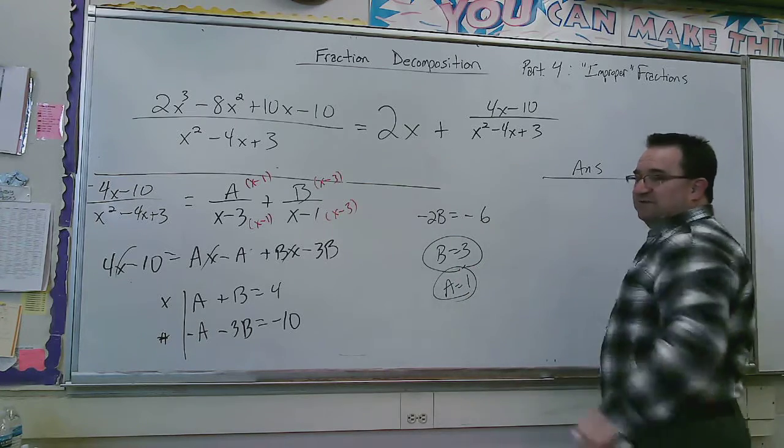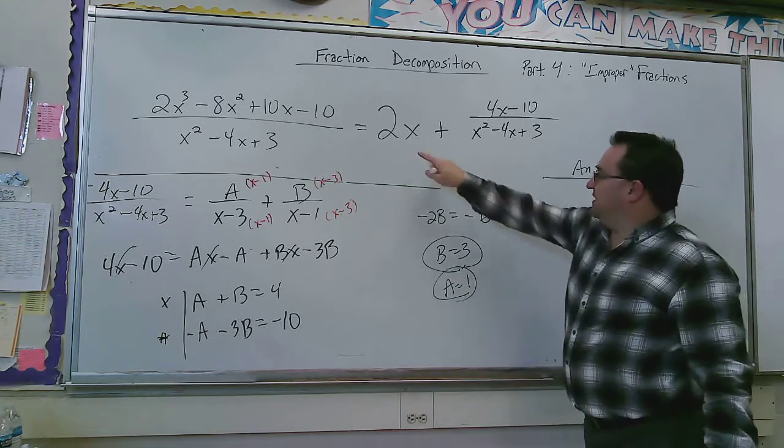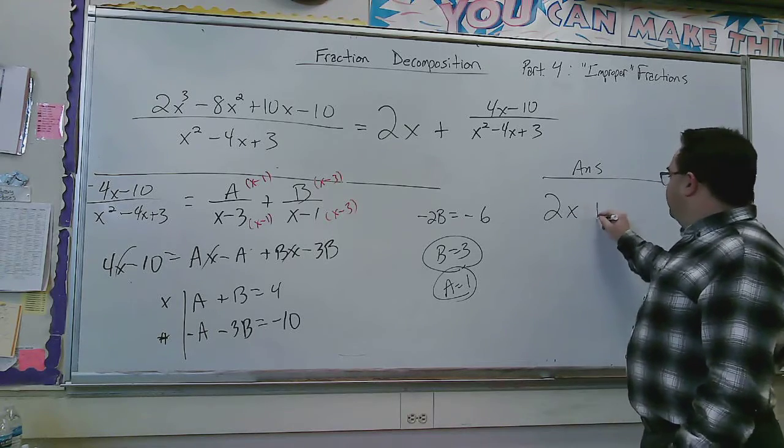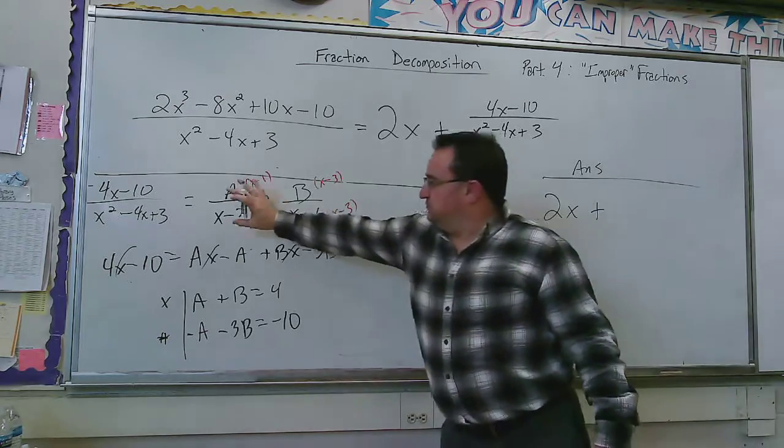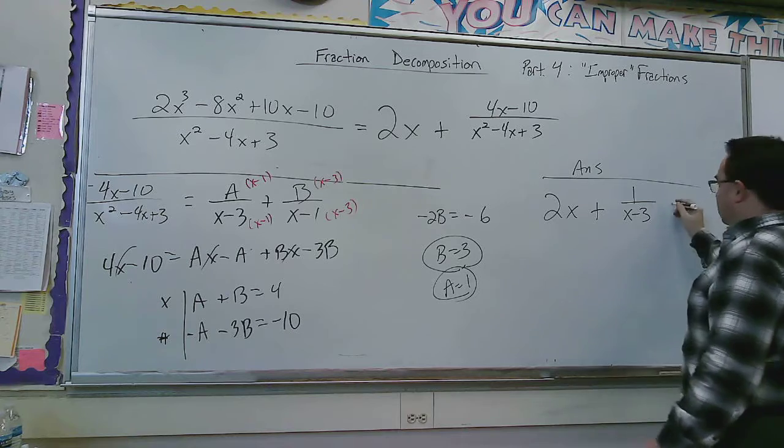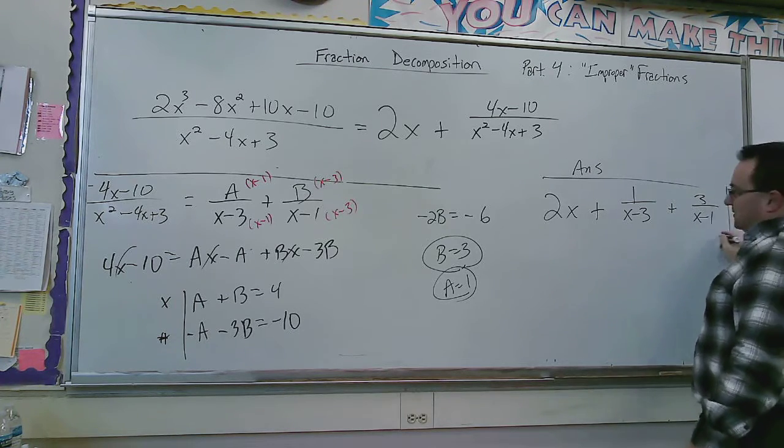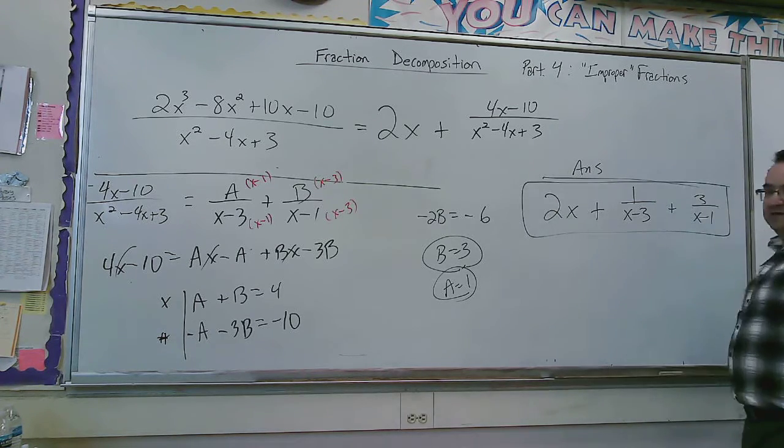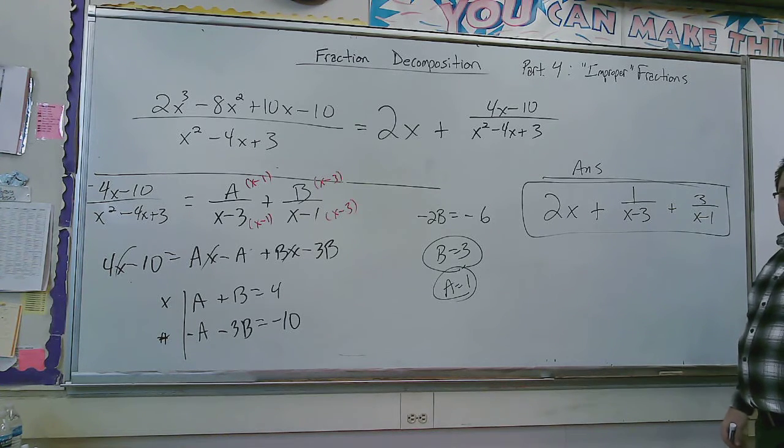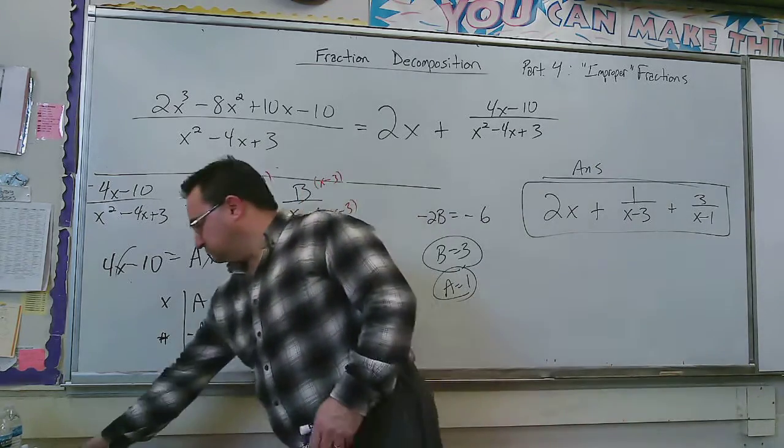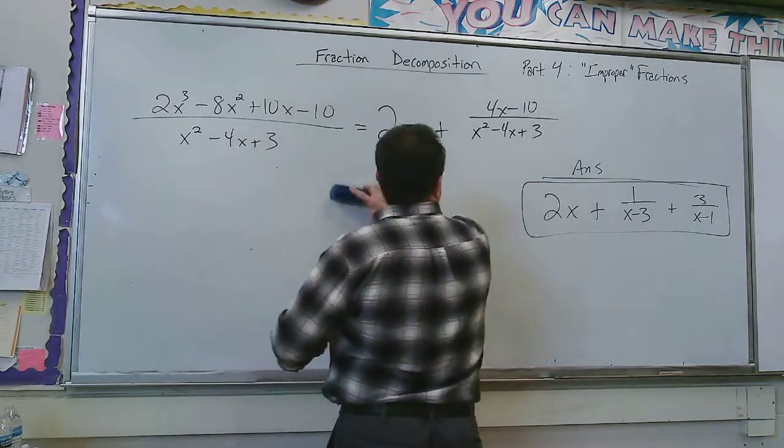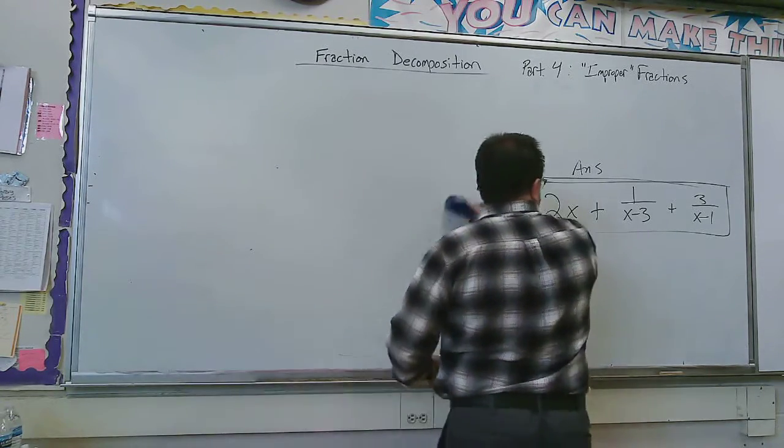So my answer is going to be, see that fraction? I'm going to decompose it. It breaks down into this, which isn't a fraction, it's the whole number, plus that is going to split into two smaller fractions, which would be 1 over x minus 3 plus 3 over x minus 1. And there is my fraction decomposition. Let's do one more of these just to make sure we got it down.